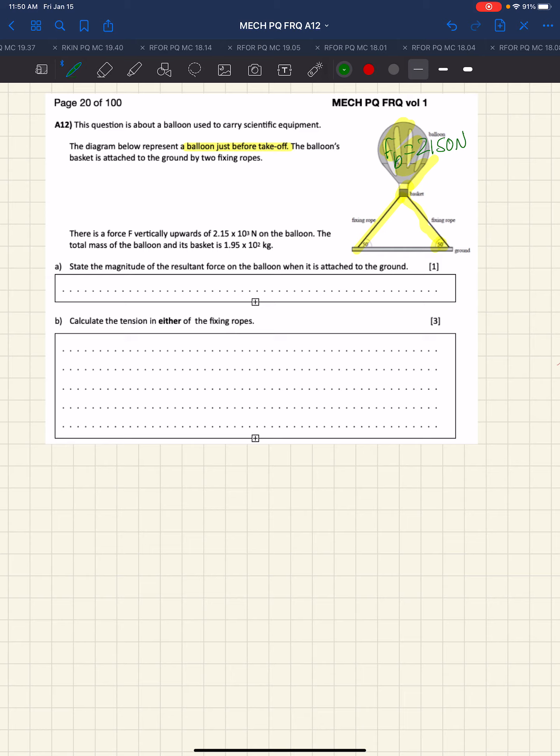State the magnitude of the resultant force on the balloon when it is attached to the ground. The first thing we know is that the net force or resulting force is ma. Acceleration equals zero, therefore f net equals zero. It's not accelerating, so if acceleration is zero the net force is zero. The net force is the resulting force, so therefore it's zero.